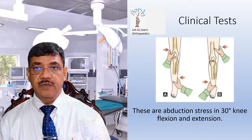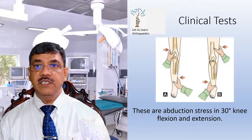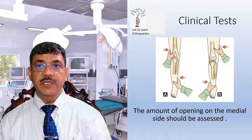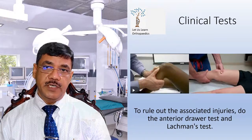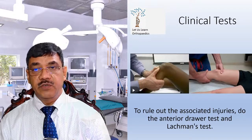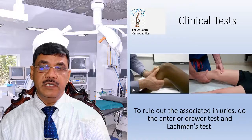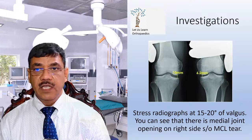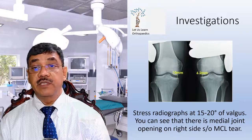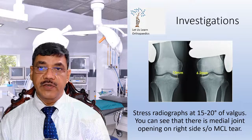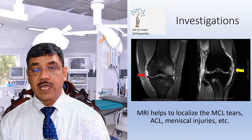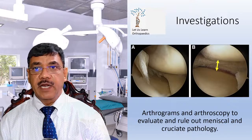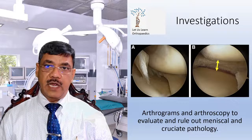The clinical tests used include the abduction stress test at 30 degrees of knee flexion and in extension; the amount of opening on the medial side should be assessed. To rule out associated injuries, the anterior drawer test and the Lachman test are performed. Investigation-wise, stress radiograph at 15 to 20 degrees of valgus can show medial joint opening, suggestive of medial collateral ligament tear. MRI helps to evaluate the MCL tear, ACL injuries, and meniscal injuries. Arthrogram and arthroscopy are used to evaluate and rule out meniscal and cruciate pathology.